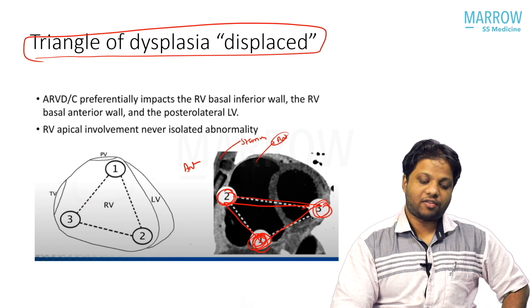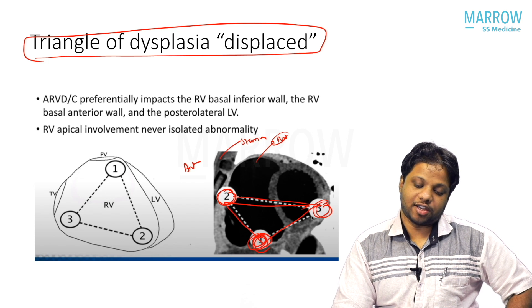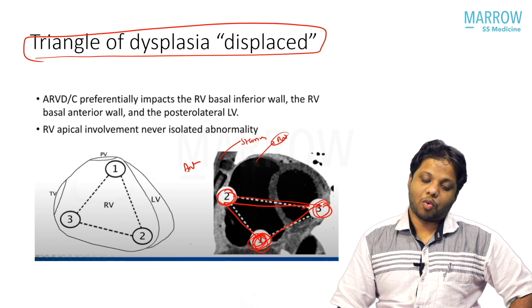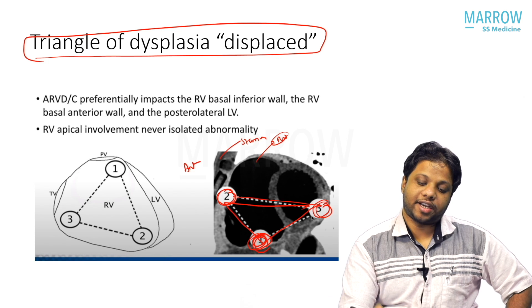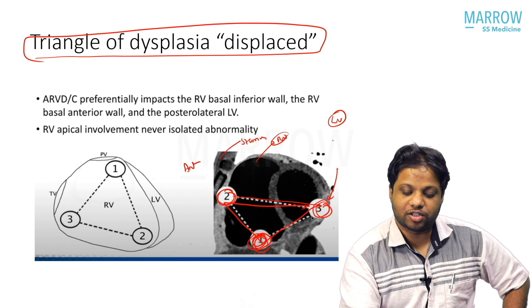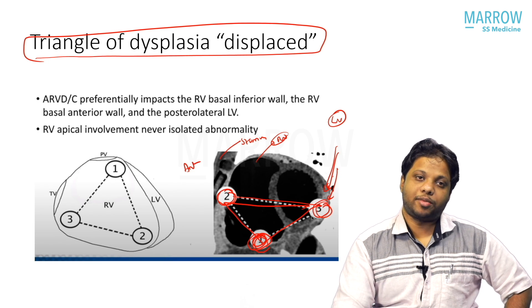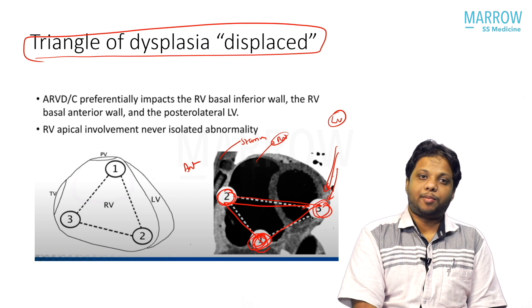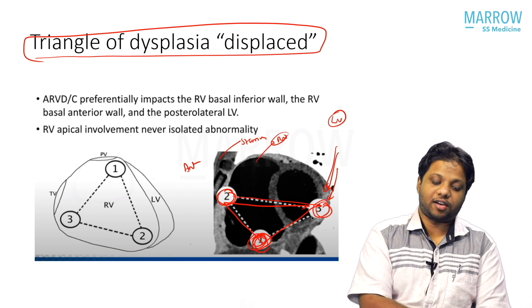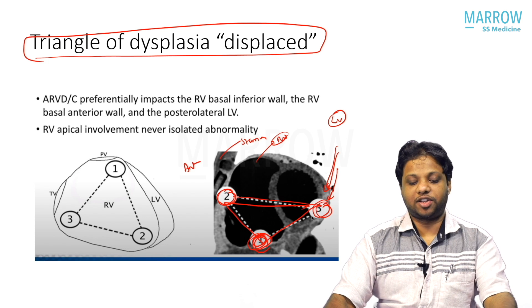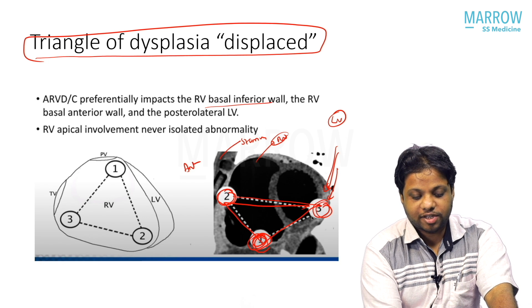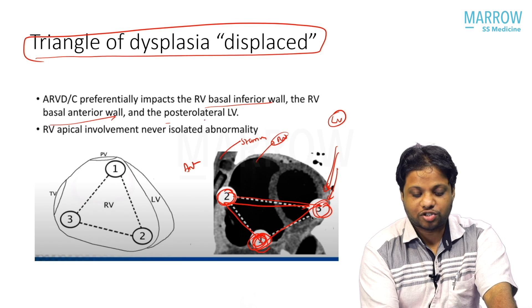RV apical involvement is very rare and is never seen in isolation — that is why the triangle of dysplasia was changed. The most common site of LV involvement in ARVD is the posterolateral LV. The new triangle of dysplasia: basal inferior wall, basal anterior wall, and posterolateral LV.